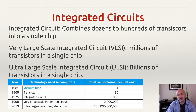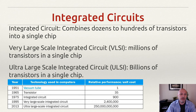Now that we understand what a transistor is — it's basically an electronic switch — let's look at how we use that to build what's known as an integrated circuit. An integrated circuit is basically just a combination of hundreds, thousands, millions, or billions of transistors into a single chip.